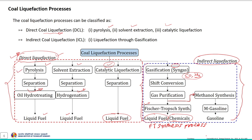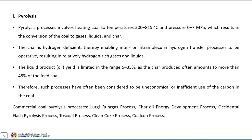Let us first begin with the pyrolysis process. It involves heating coal to a temperature of around 300 to 800 degrees Celsius and a pressure of around 0 to 7 MPa — sometimes at atmospheric pressure and sometimes at relatively high pressure. This results in the conversion of coal to gas, liquid, and char as products. The produced char is hydrogen-deficient, meaning it consists mostly of carbon rather than hydrogen.